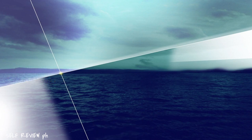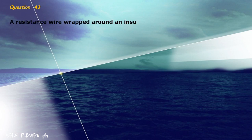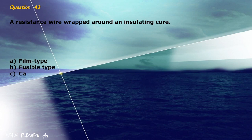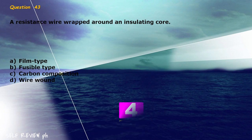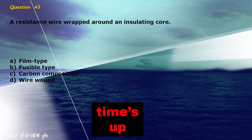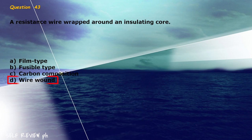Question 43: A resistance wire wrapped around an insulating core. A) film type, B) fusible type, C) carbon composition, D) wire wound. The correct answer is letter D, wire wound.